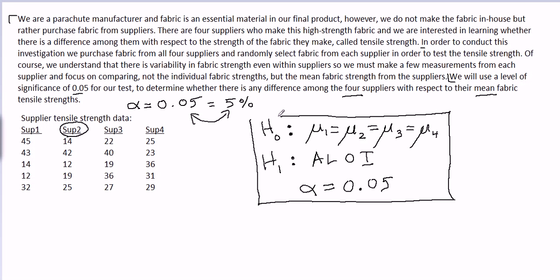But it's important to remember that the null hypothesis starts out by assuming this very specific possibility, which is that all four of the populations, all four of the groups, in this case they're suppliers of parachute fabric, all four of the groups have the same mean.